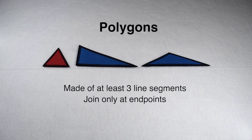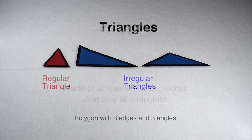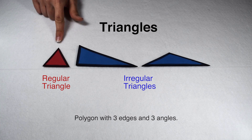We know that in order to be a polygon, a figure has to be made up of at least three line segments that join at their endpoints only. We also know we use words much more specific than just polygon to describe a lot of shapes. We're going to start with our three-sided polygon because it's our smallest — our triangle.